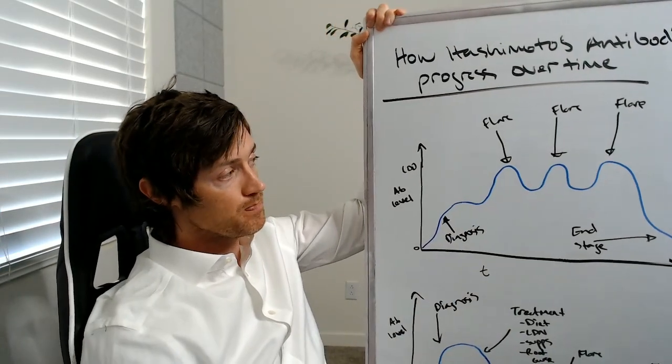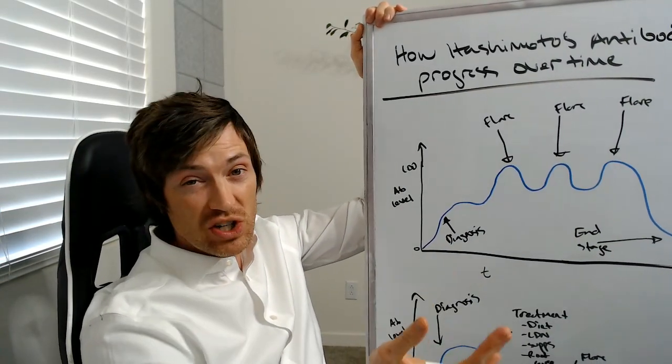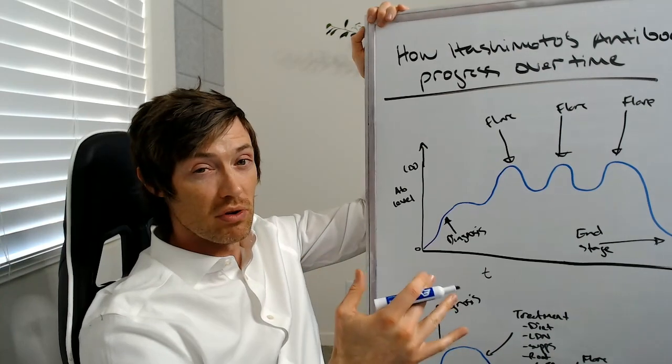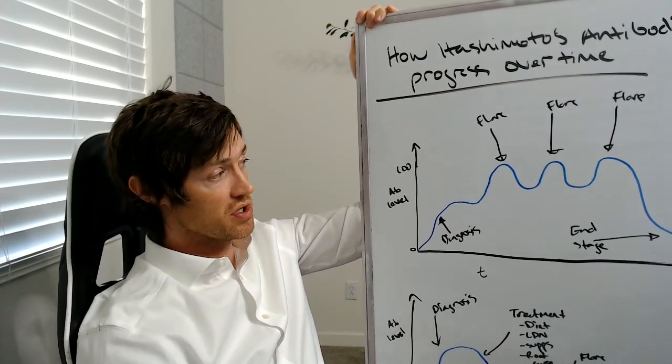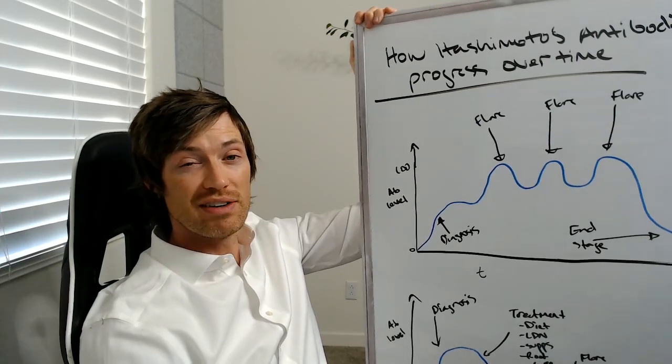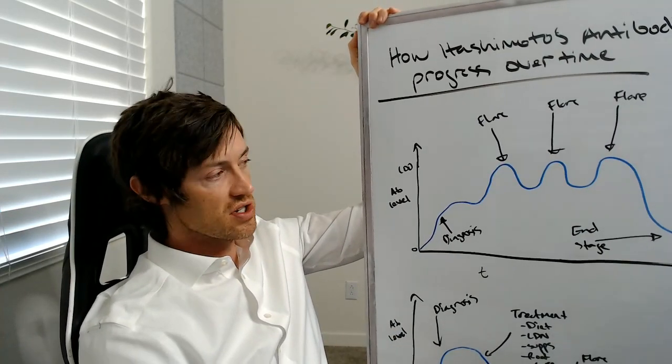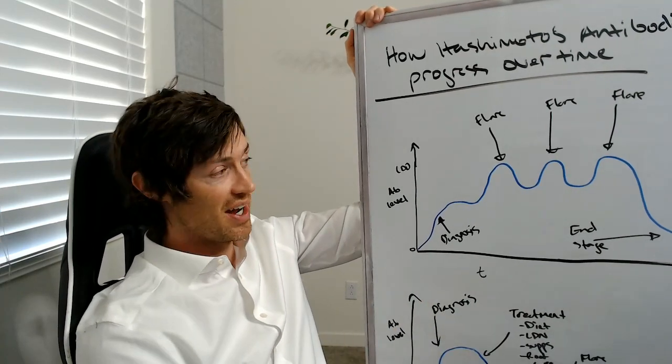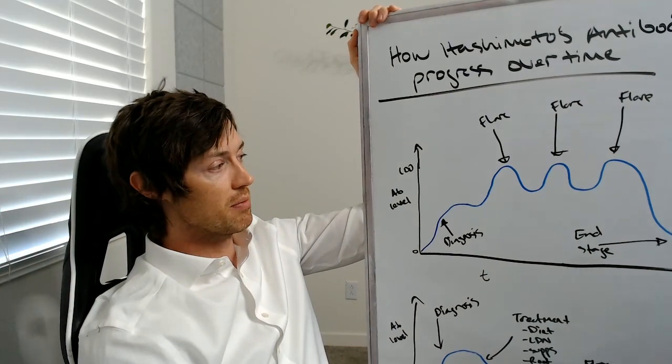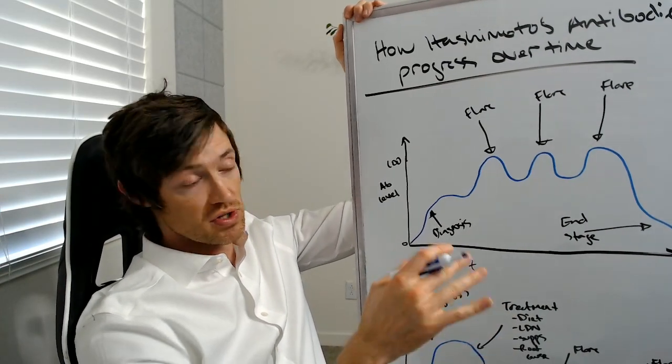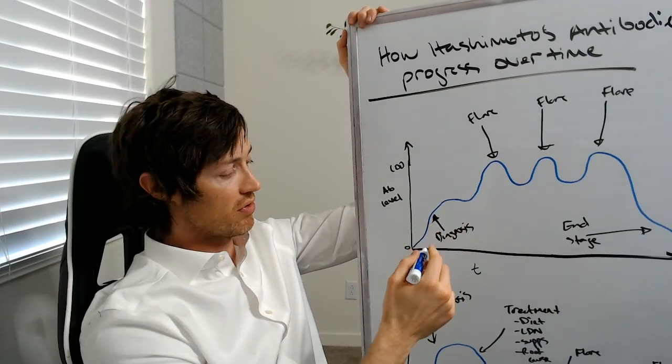And then the second option includes what happens to your antibody levels if you're actually trying to lower those antibodies and how that changes your outcome and how you're feeling. So let's first talk about the first scenario, which would be people who may not even know they have Hashimoto's. Remember, most people aren't even diagnosed until they're in something like stage three or so out of five or six stages of Hashimoto's.